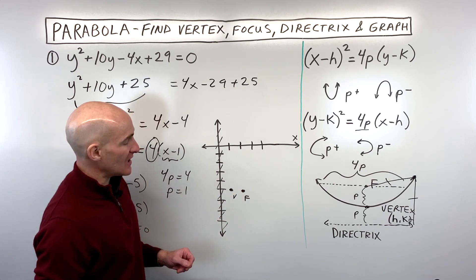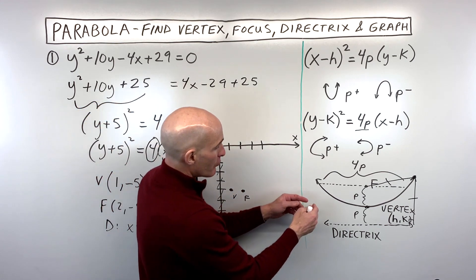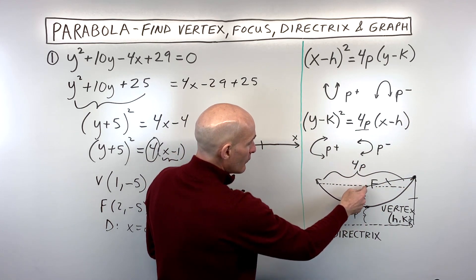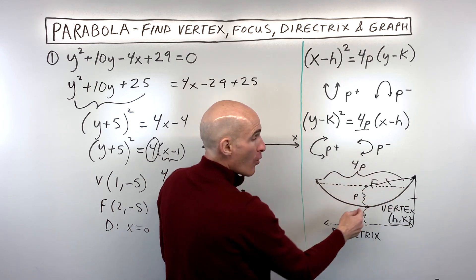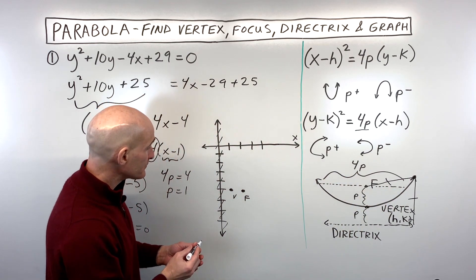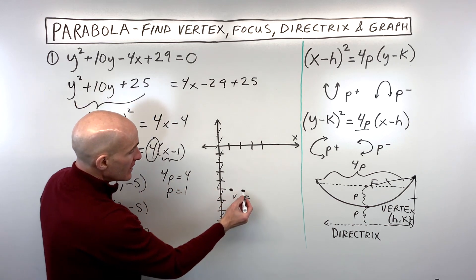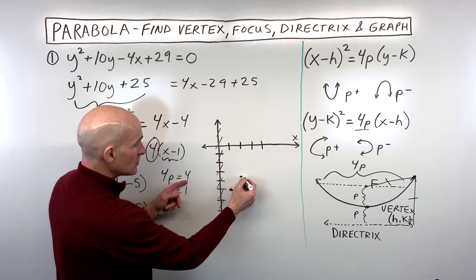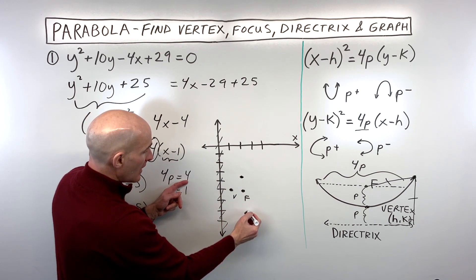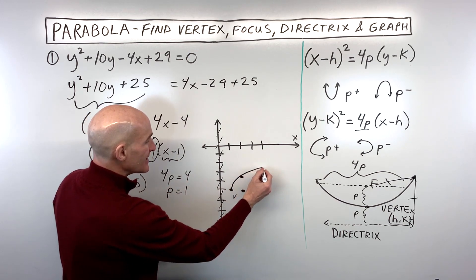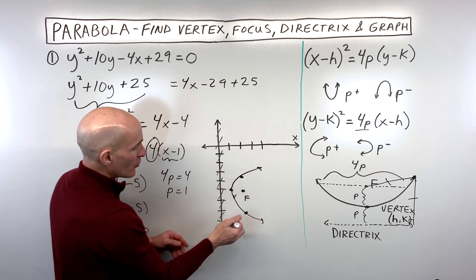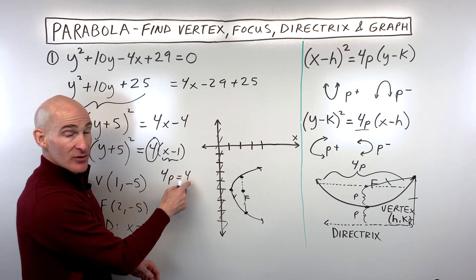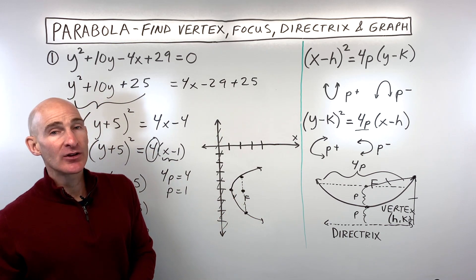The parabola gets wider as you go further out. At the level of the focus, it's always 4p wide — that's called the focal chord. Here 4p = 4, so I cut that in half: go up 2 and down 2 from the focus to get two easy points on the parabola. This distance of 4 at the focus level gives a good sketch. Let's look at another example.